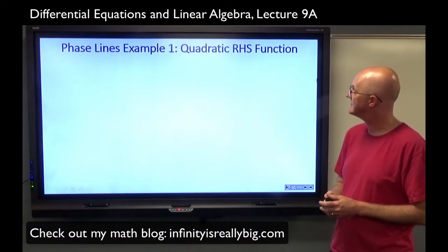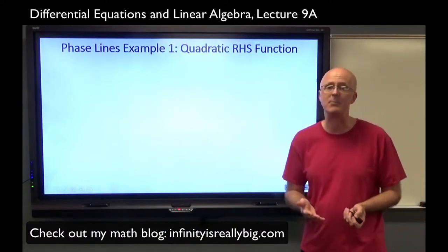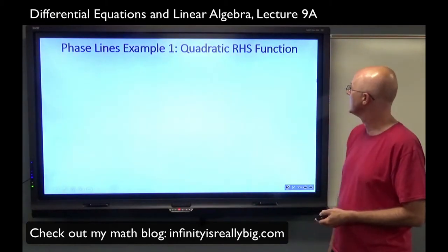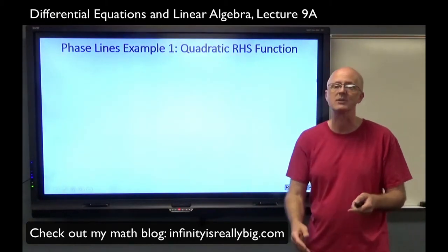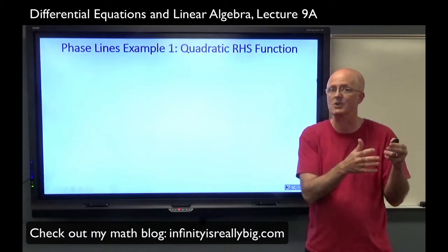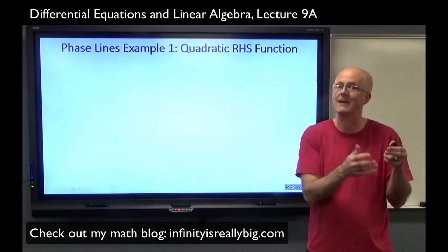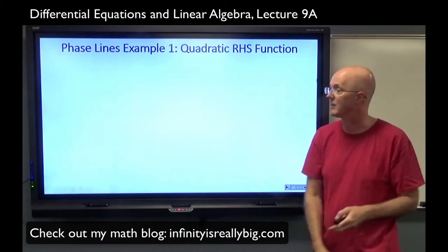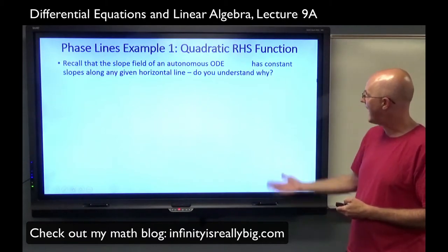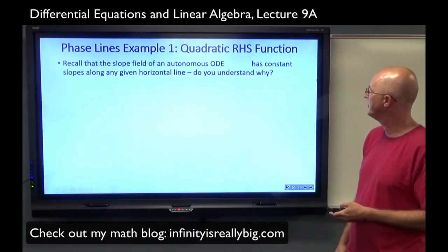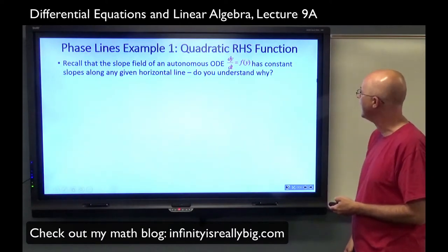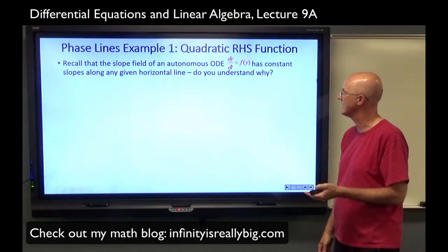So let's look at examples of phase lines to start off with. This first example is the same example as at the end of lecture 8a. We're going to look at a quadratic right-hand side function. All of these examples are an autonomous differential equation where the right-hand side function is f of y — it only depends on y, the dependent variable, rather than t at all. That's where we can make phase lines.